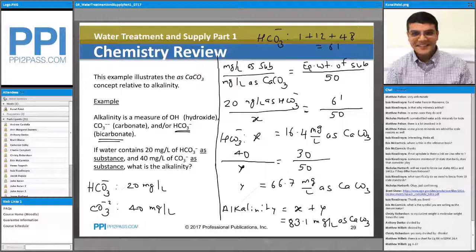So that's one way to do it. If you are okay with calculating molecular weight and equivalent weight and so on, just set up a ratio: milligrams per liter as substance divided by milligrams per liter as calcium carbonate equal to equivalent weight of substance over 50, and then solve for it. The other way to do it is in the reference manual.